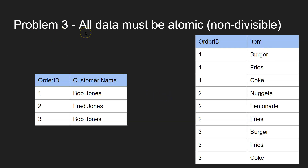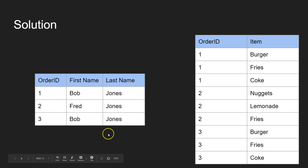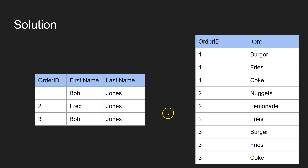Third thing: all data must be atomic or non-divisible. If you look over at customer name — Bob Jones — you can see that Bob Jones isn't atomic. It can be divided further into his first name and last name. That makes it a composite value, and those are different things that need to be separated out. So you create a column for their first name and a column for their last name, and you just put them in separate cells. That's how you put a database table into first normal form.